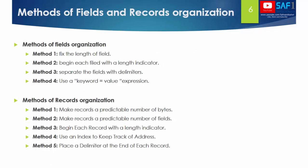There are several methods for field organization. The first is to use a fixed length field — each field in a record must have the same length, for example 10 bytes. The second is to begin each field with a length indicator specifying how many bytes it uses. The third is to use a delimiter between fields that is unique and not repeated in any field. The fourth is to use a keyword-value pair, for example first name equals the value, country equals the value, and so on.